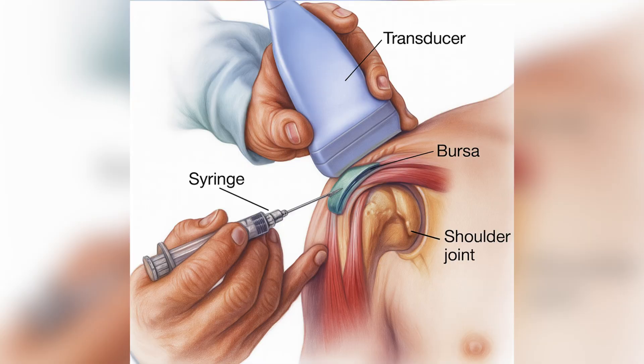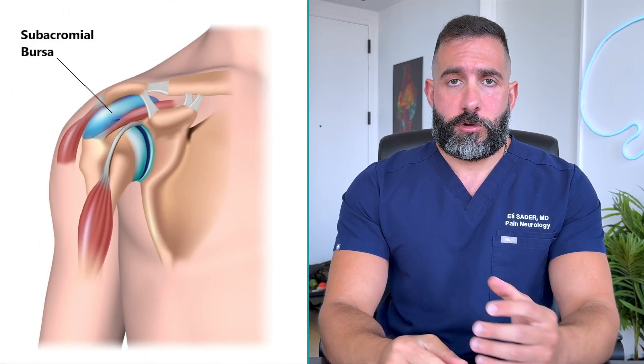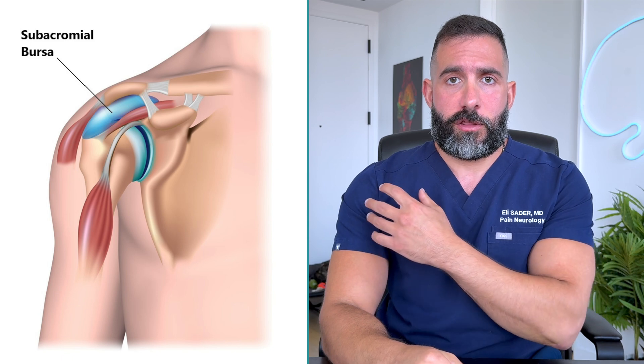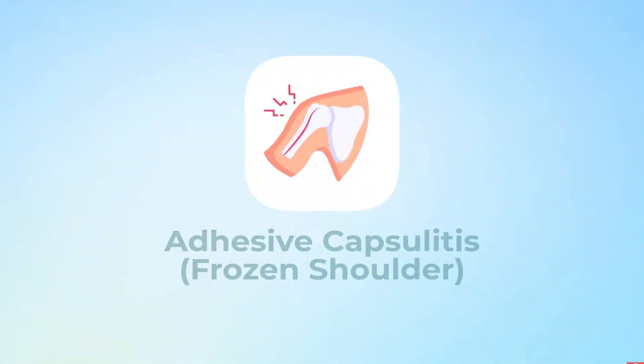For this kind of pain, the treatment is an injection in the bursa — specifically what we call the subacromial bursa — which is essentially where the muscles of the rotator cuff are located. That would be the target for that kind of pain.